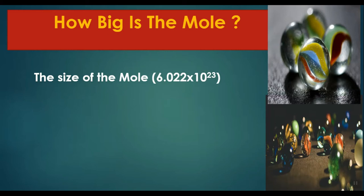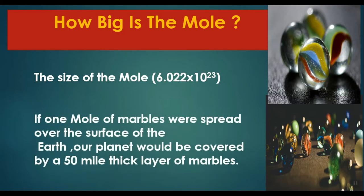Students, if you have one mole of marbles, how many marbles would be present? If one mole of marbles were spread over the surface of the Earth, our planet would be covered by a 50-mile thick layer of marbles. You can imagine how big that value is — with only one mole of marbles spread over the Earth's surface, it creates a 50-mile thick layer.